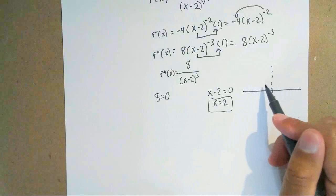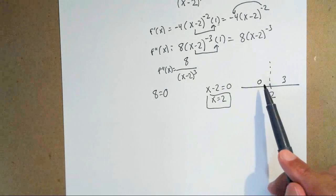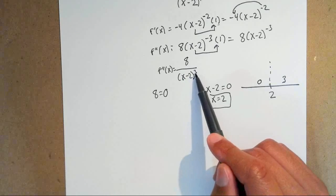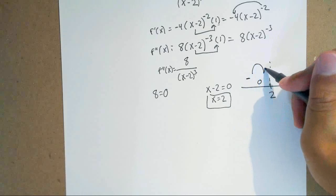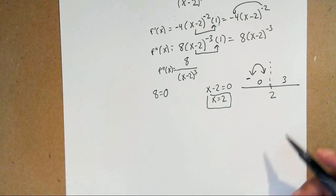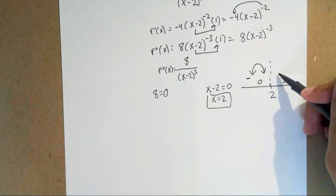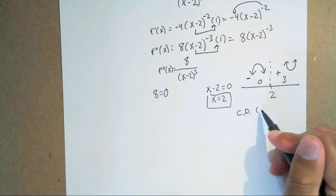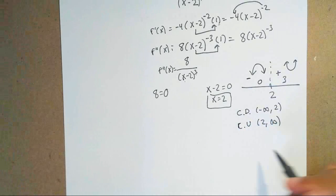Plug in a number left of 2 — use 0 — and a number right of 2 — use 3. Plug 0 into the second derivative: 0 minus 2 is negative 2, negative 2 cubed is still negative, and positive over negative gives a negative. So any value between negative infinity and 2 is negative, meaning concave down. Plugging in 3: 3 minus 2 is positive, positive cubed is still positive, positive over positive is positive — meaning concave up. So you have concave down from negative infinity to 2, and concave up from 2 to infinity.